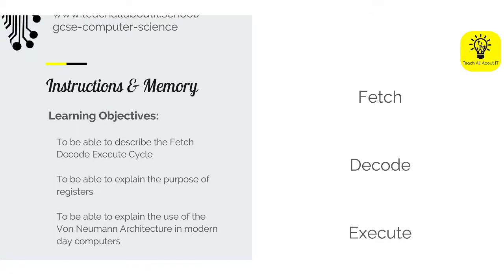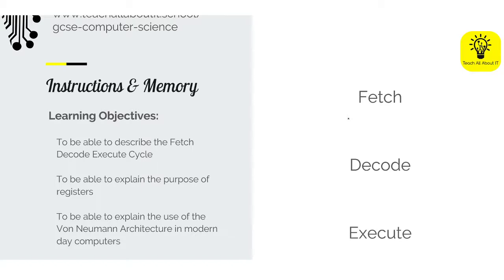So we're going to be looking at instructions and memory today. Do you remember — pop this into the chat — when we save something, whether it is an instruction or data, what does it get saved into? It is a special tiny piece of memory inside the CPU, and it always holds something quite specific. Get that into the chat for me.